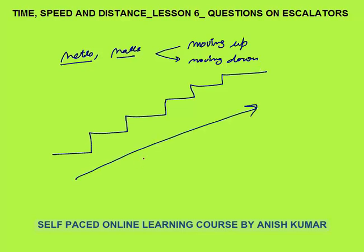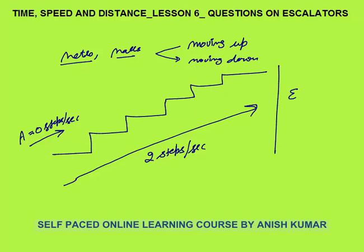Escalators have their own speed, measured in steps per second. Let's say the escalator speed is two steps per second — it moves you up two steps in one second. Now if person A has a speed of zero steps per second, he's just standing on the escalator, so his effective speed would be two steps per second, the speed of the escalator.